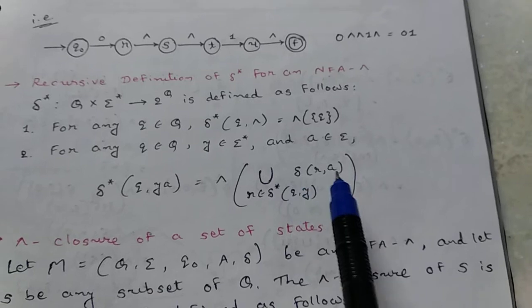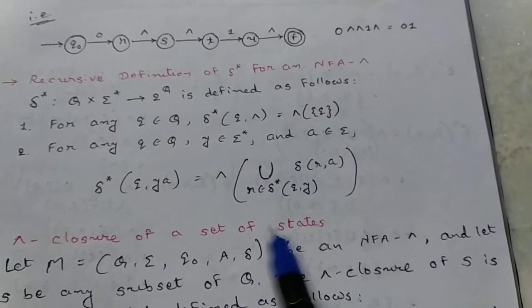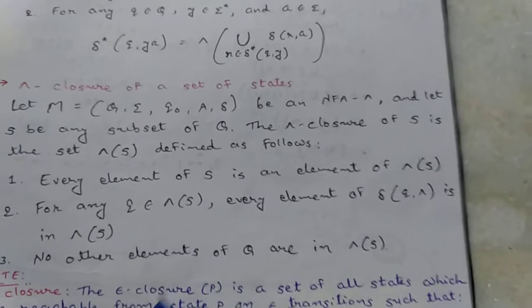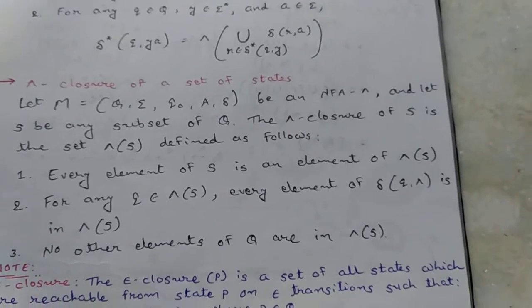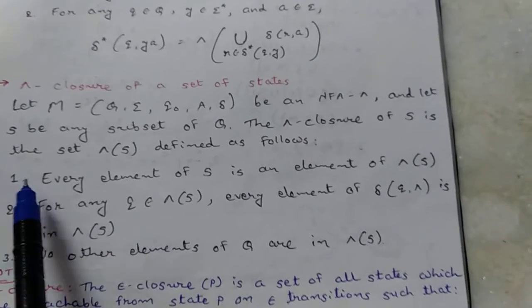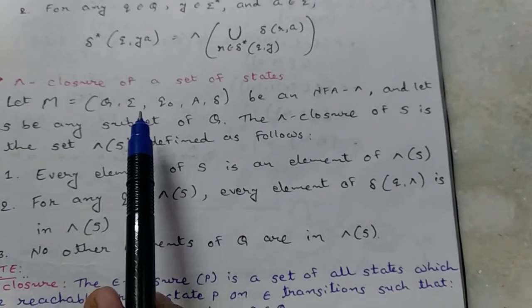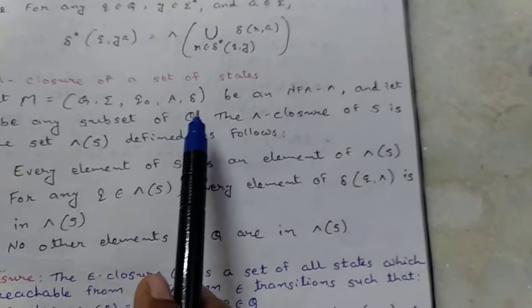How to find the recursive definition of delta star for NFA epsilon will be explained in later videos. Next, epsilon closure of a set of states. Let M equal Q, sigma, q0, A, delta be an NFA epsilon, and let S be any subset of Q.